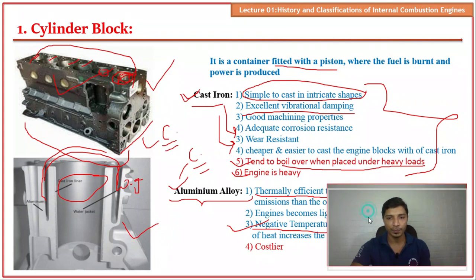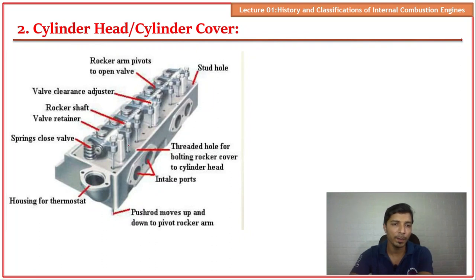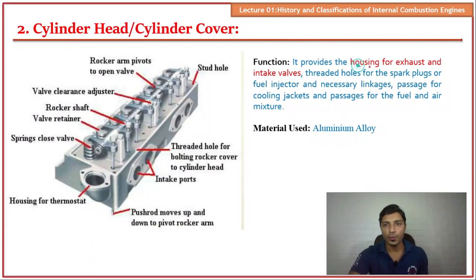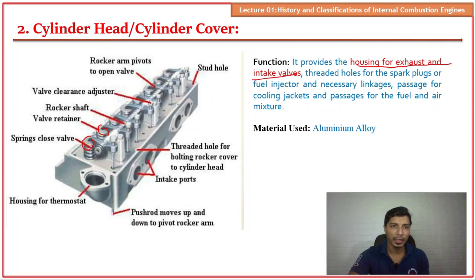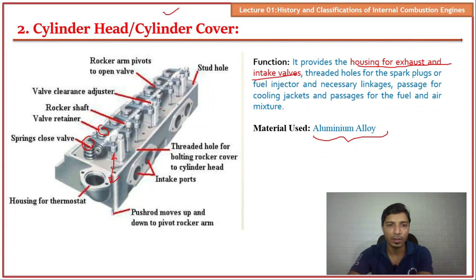The second important component is the cylinder head or cylinder cover, which is placed on top of the cylinder block. Its main function is to house the exhaust and intake valves. The cylinder head also contains the camshaft, push rods, and rocker arms. The cylinder head cover is placed just above the cylinder head. The material used is aluminium alloy.